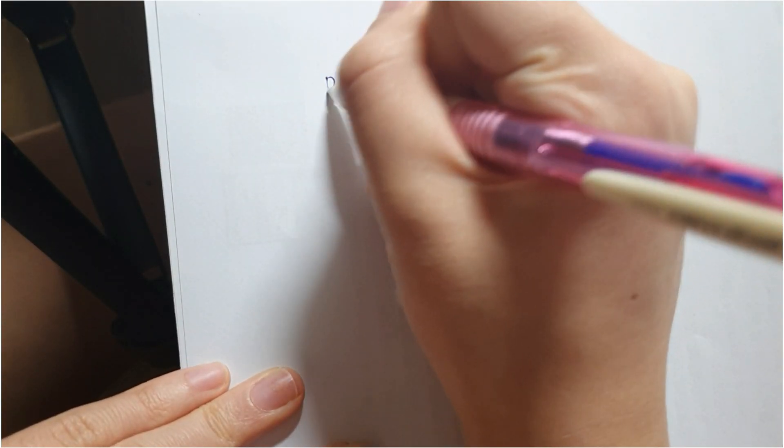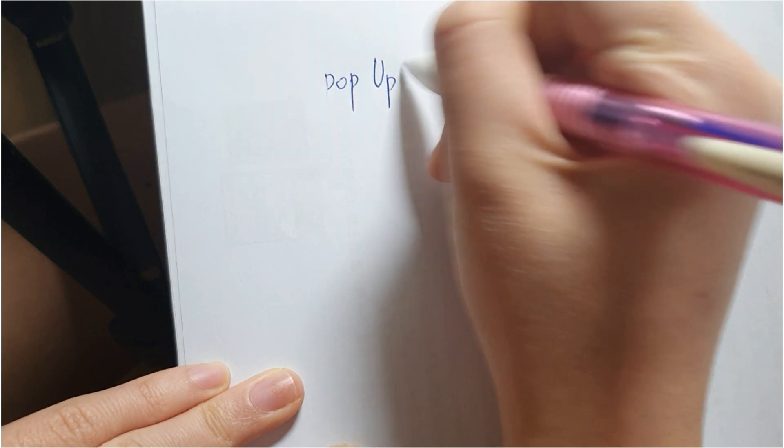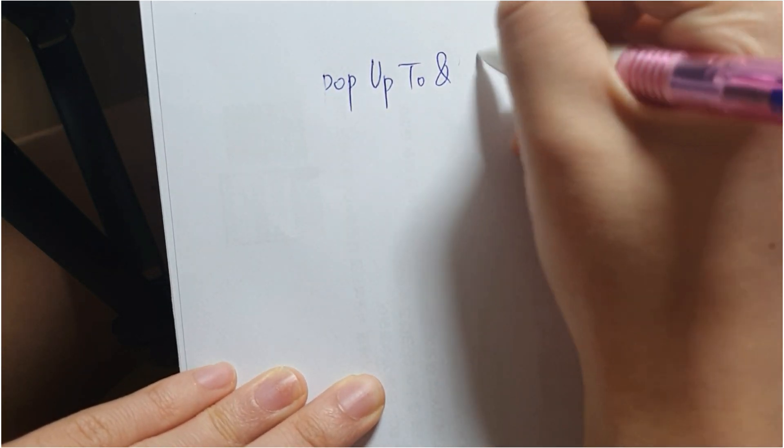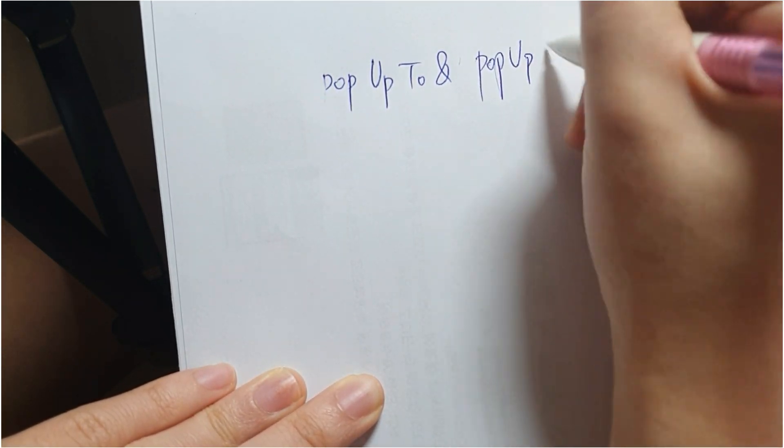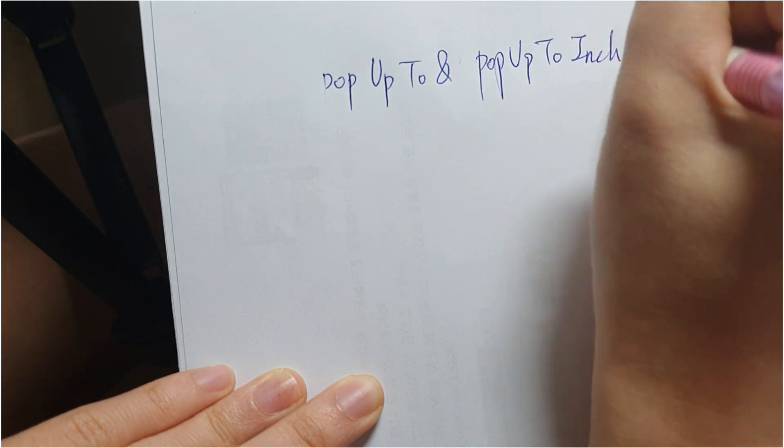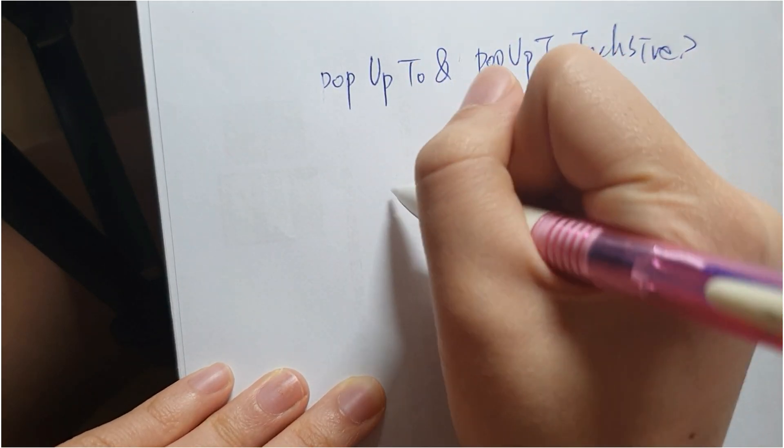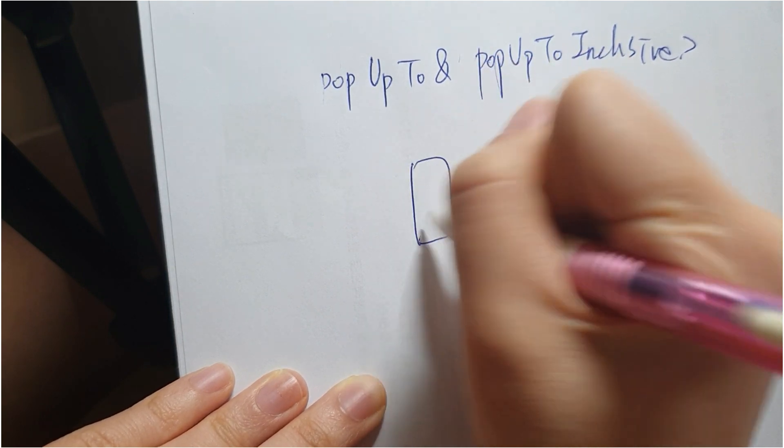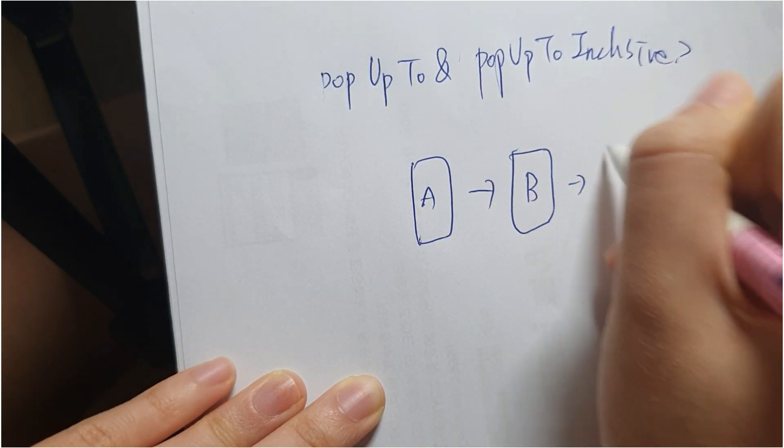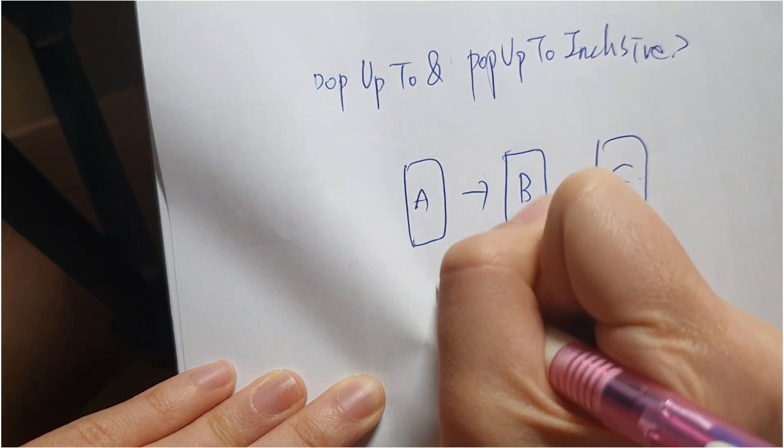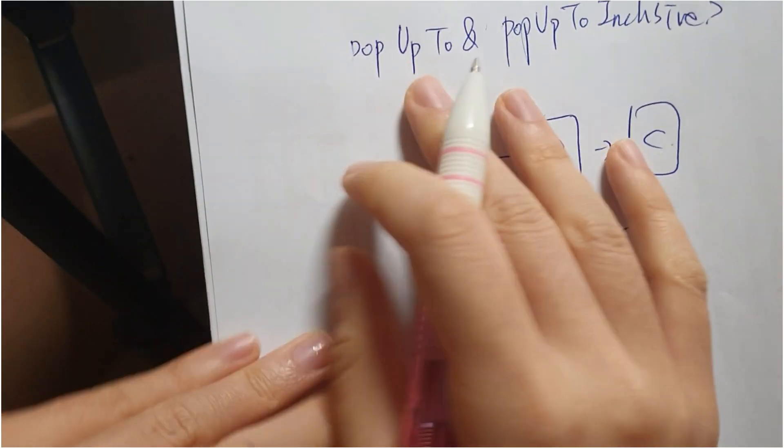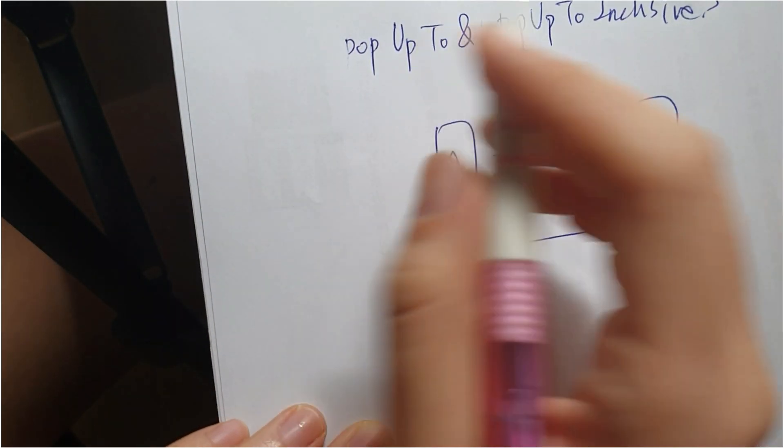Okay, so what is pop up to and pop up to inclusive? Let's say we have a circular navigation graph like A to B, B to C, and go back to A again. So it's like a circular navigation graph.